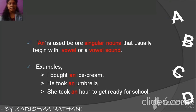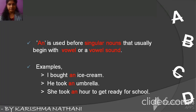AN is used before singular nouns that usually begin with a vowel or a vowel sound. For example, I bought an ice cream. I is a vowel and ice cream sounds like a vowel, so: an ice cream.